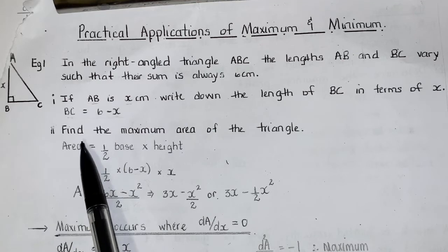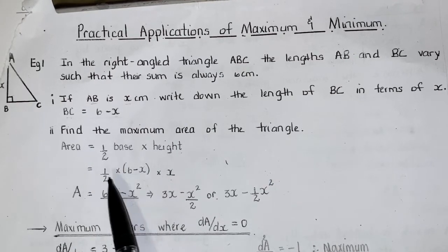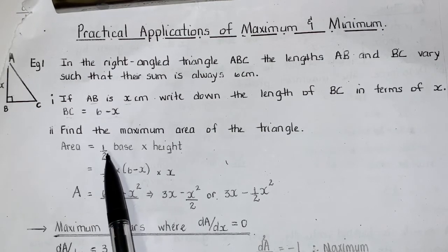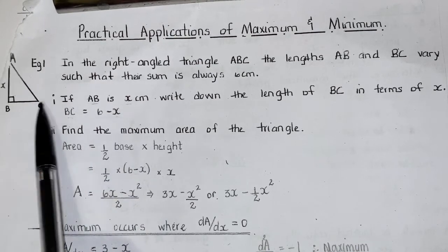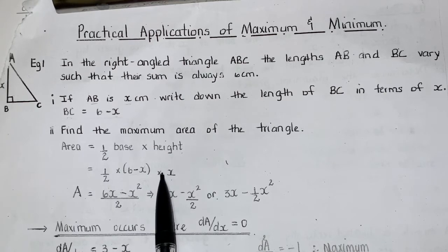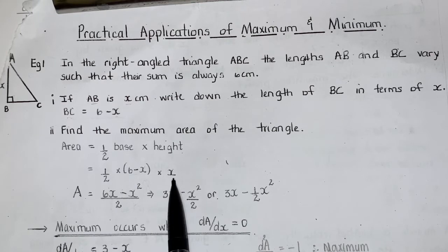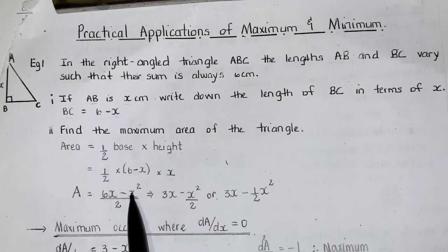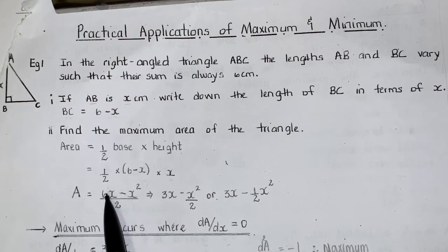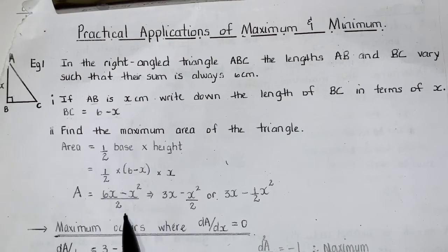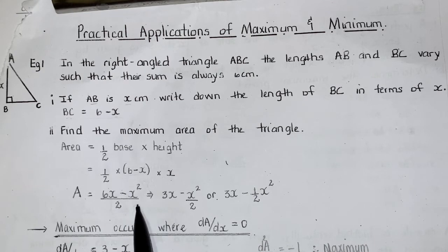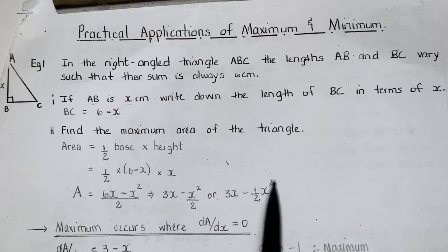The second part of the question was to find the maximum area of the triangle. The formula to find the area of a triangle is half base times height. Substituting the appropriate expressions: half times the base, which was BC with expression 6 minus X, times the height, which is AB with expression X. When we expand, 6 times X is 6X, minus X times X is minus X squared. So our area expression is (6X minus X squared) over 2, which can also be written as 3X minus X squared over 2.